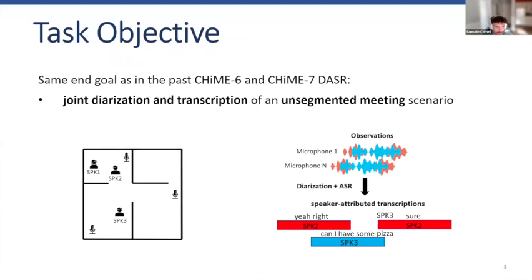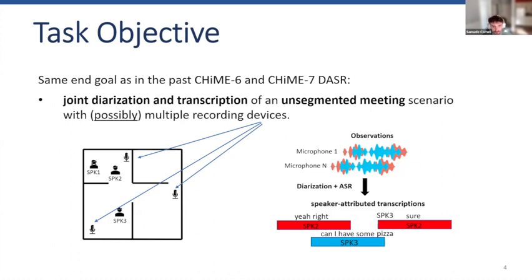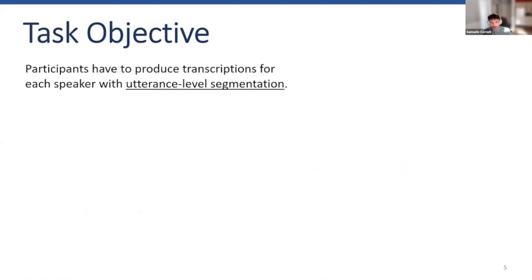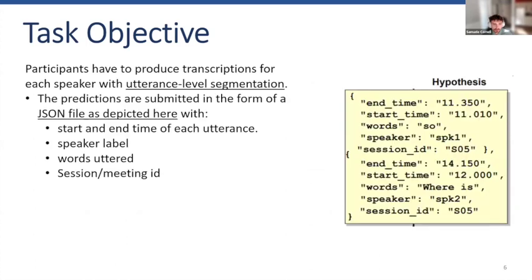What does it mean? It means that we can possibly have multiple recording devices, but this year we have one scenario with just one recording device. Participants have to produce the transcription for each speaker with utterance-level segmentation and utterance-level speaker attribution. Participants have to produce a JSON file where each entry is an utterance from each speaker with the start time, end time, the words, the speaker ID, and the session ID. The session is the meeting ID.